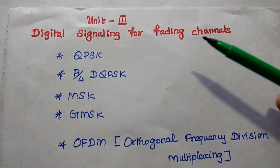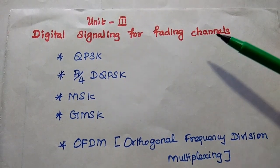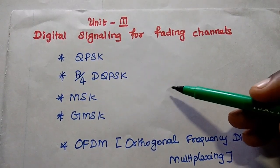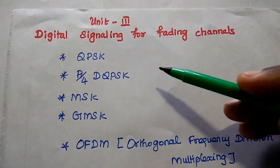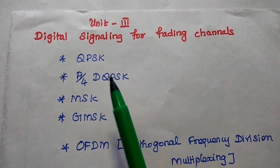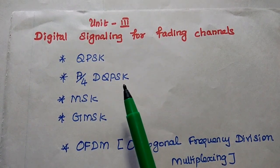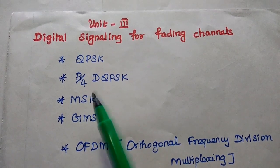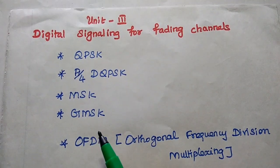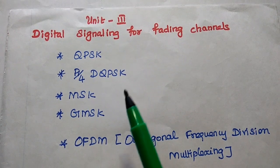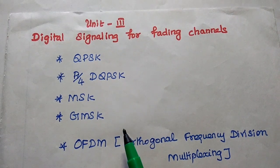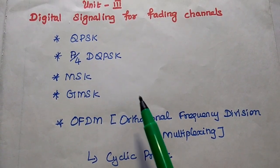The third unit is digital signaling for fading channels. This unit is divided into two halves. The first half covers shift keying methods. There are four shift keying methods: QPSK (Quadrature Phase Shift Keying), pi/4 Differential QPSK, Minimum Shift Keying (MSK), and Gaussian Minimum Shift Keying (GMSK). We can definitely expect one shift keying method question along with some problems.